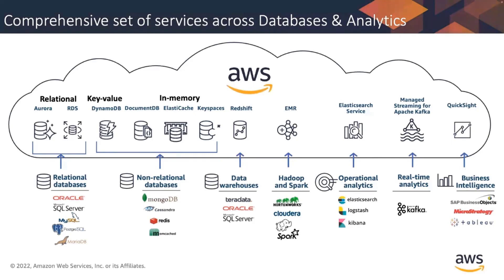For customers that want to move away from their expensive proprietary Teradata, Oracle, and SQL Server data warehouses, they're moving to Amazon Redshift. Customers moving their Hadoop and Spark deployments on-premise are moving them to EMR for cost savings and the benefit of a managed service. For customers moving from ELK stack on-premises solutions, they're moving to ElastiCache. We also have real-time analytics for customers moving from Apache Kafka deployments to Amazon Managed Streaming for Kafka.